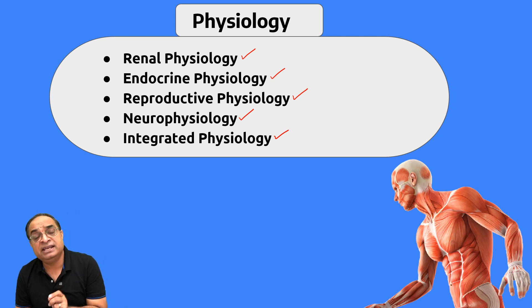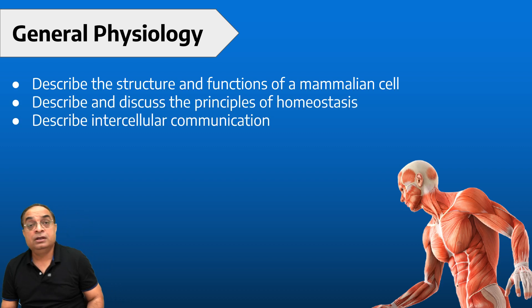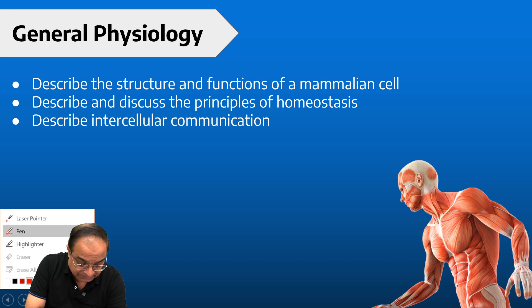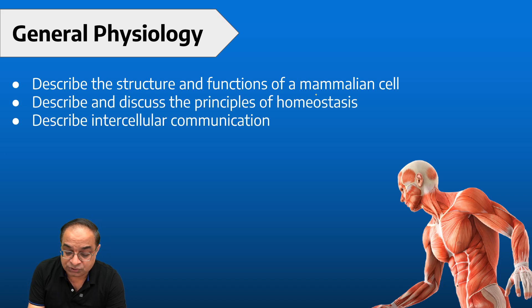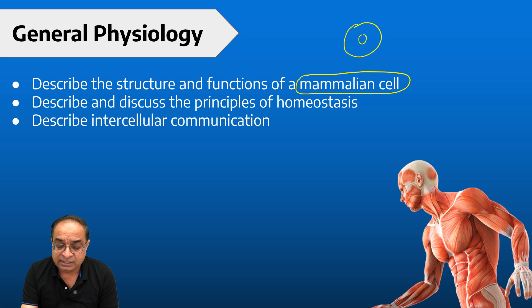These are the main chapters of human physiology. The focus in this session is mainly on general physiology. Now, what are the different topics which you have to study in general physiology? Number one is describe the structure and functions of a mammalian cell. This is a comparatively very easy topic and you can relate it with your junior or your high school classes also. We'll be studying about the structure of the plasma membrane, the structure of the nucleus, and what are the different organelles which are present in a cell.